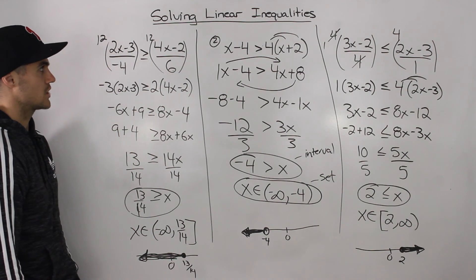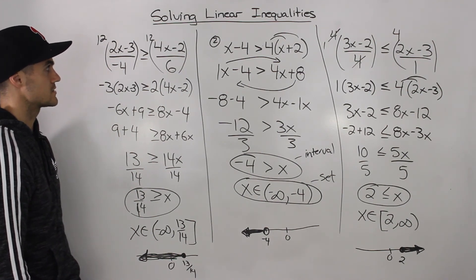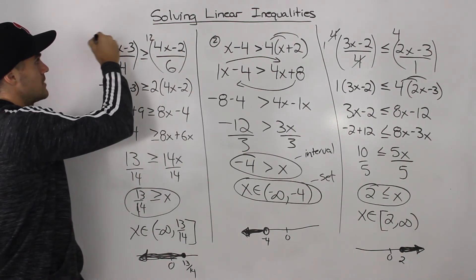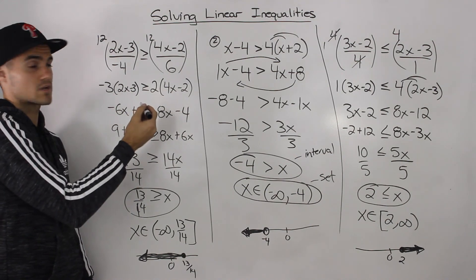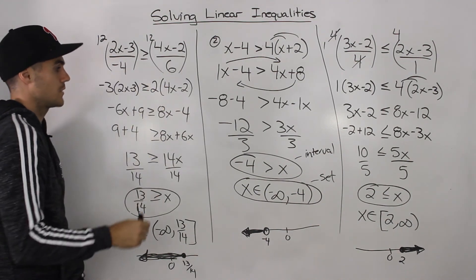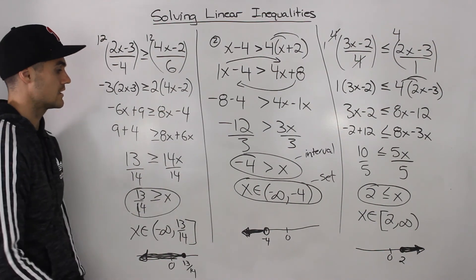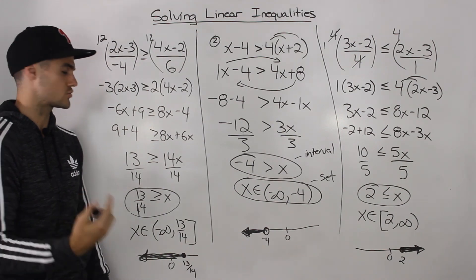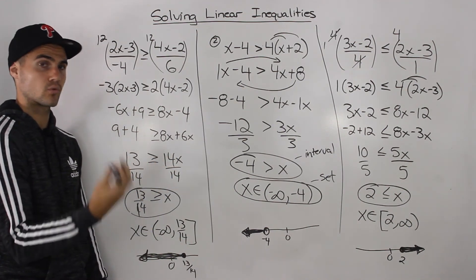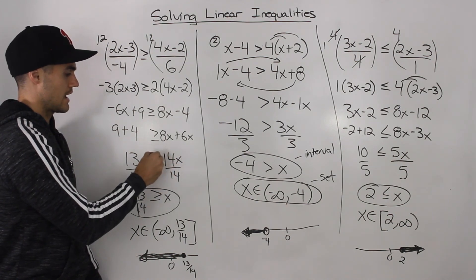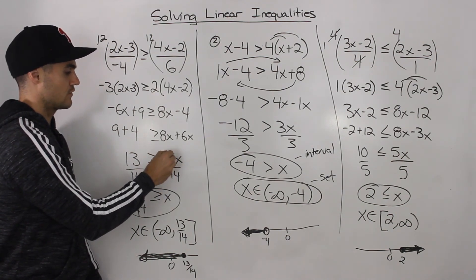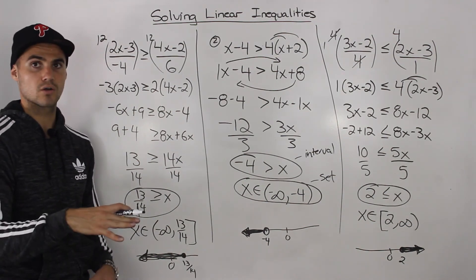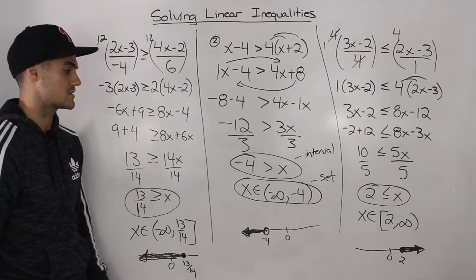So that's pretty much how you solve linear inequalities. You've got to be careful with denominators — that's when it can get more complex — but you simply multiply by a positive lowest common denominator to get rid of those denominators, and then just solve algebraically. Remember, when you're dividing by negatives, you always have to flip the sign. So try to make sure the coefficient in front of the variable is positive once you simplify. They're pretty similar to equations — just bring all the variables to one side, all the constants to the other, and then solve from there.